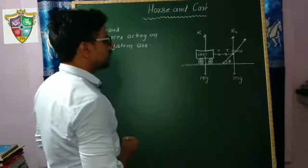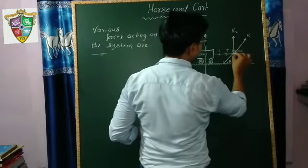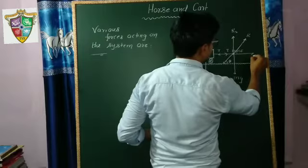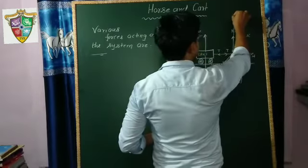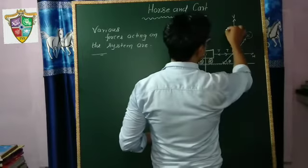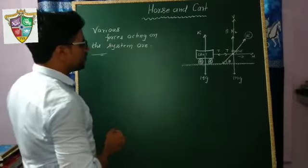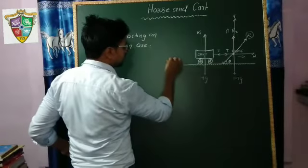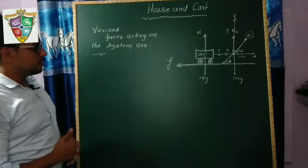And if we resolve this R into two components, this is the horizontal component and this is the vertical component. This normal reaction is resolved into two components: horizontal component and vertical component. And when the cart moves forward, there also exists a force of friction between the tires of the cart and the ground.